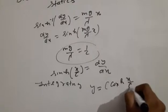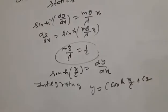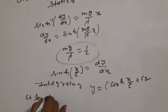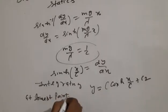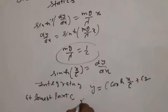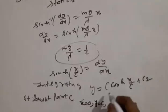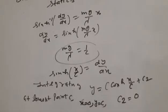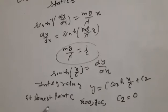We have c2, the integral constant. At lowest point, at lowest point we have C, x equal to zero.